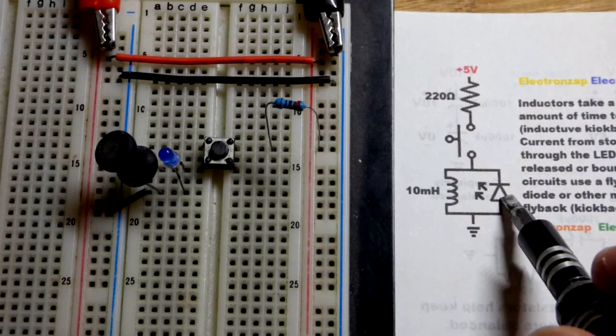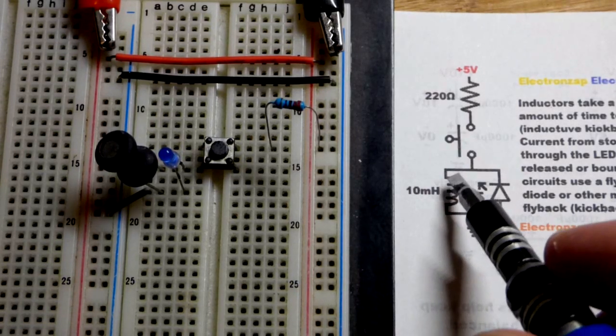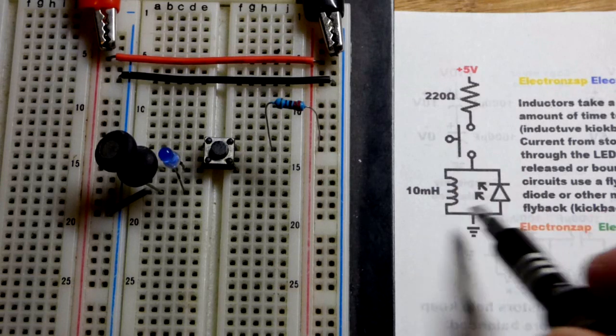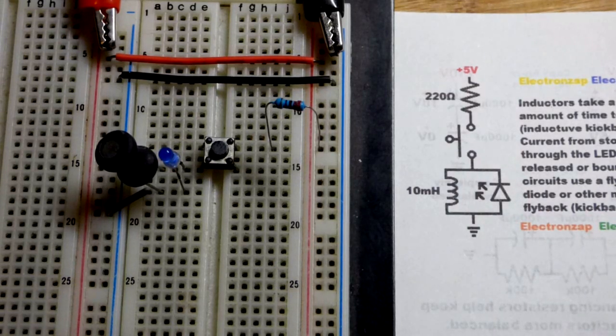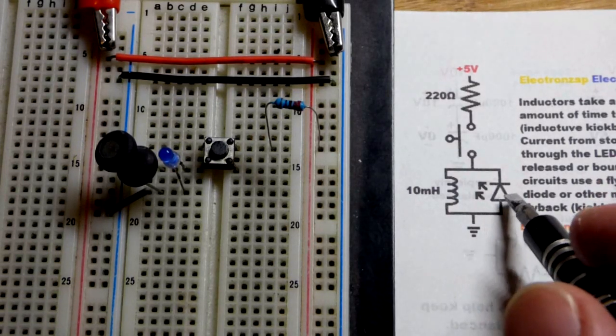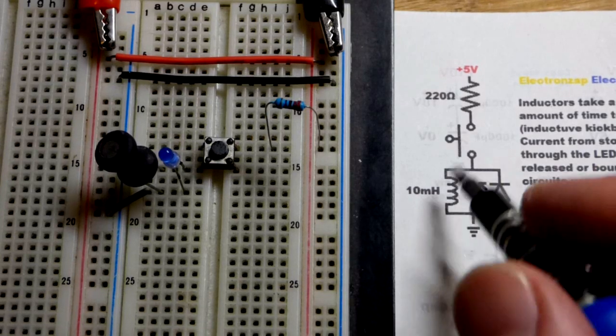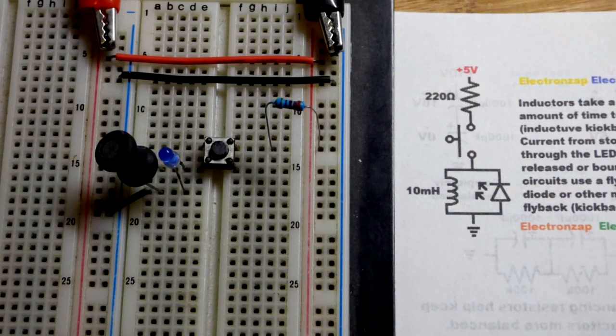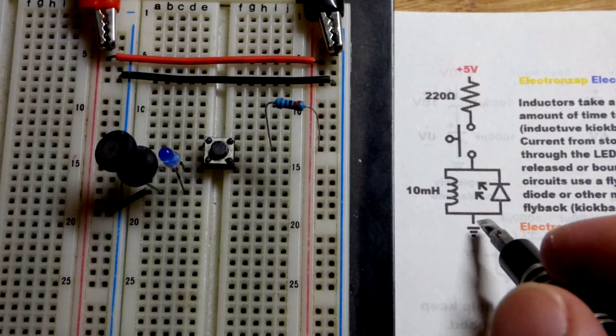You can call it a kickback diode. Sometimes you call that flyback when different people use different terminology for when the inductor just keeps pushing current and it will raise voltage if need be to do that. But a flyback diode will give that return path. It doesn't increase current. Current goes down, but it does keep flowing for a little bit.